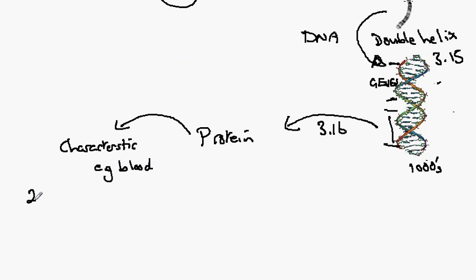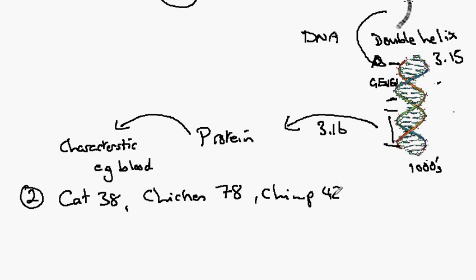Different organisms have different numbers of chromosomes. For instance, a cat has 38. A chicken is known to have 78. A chimpanzee would have 42, and humans have 46 chromosomes per cell.